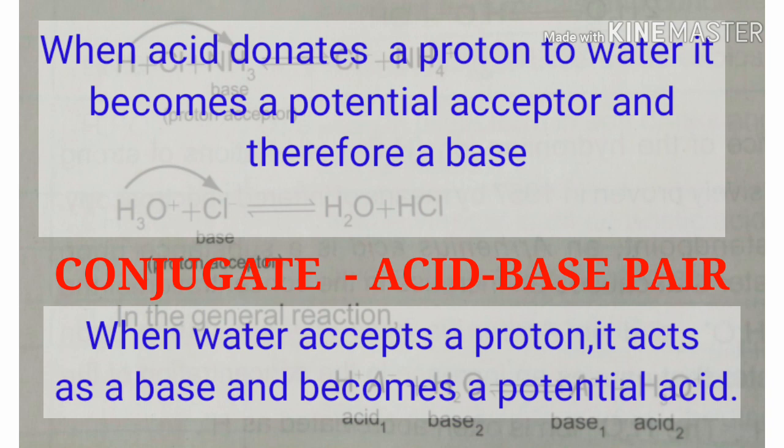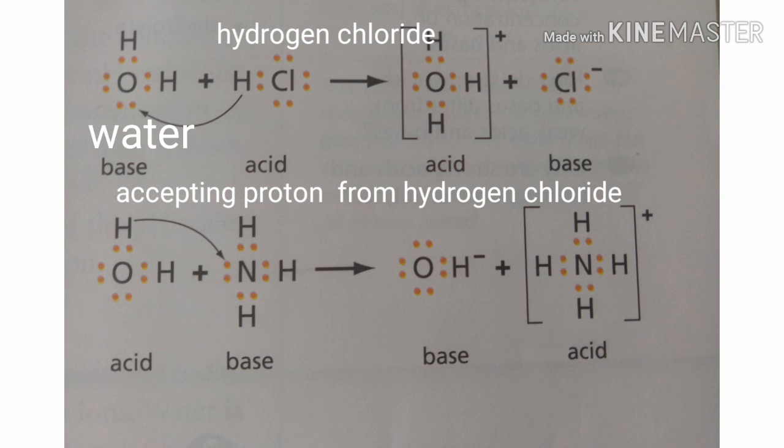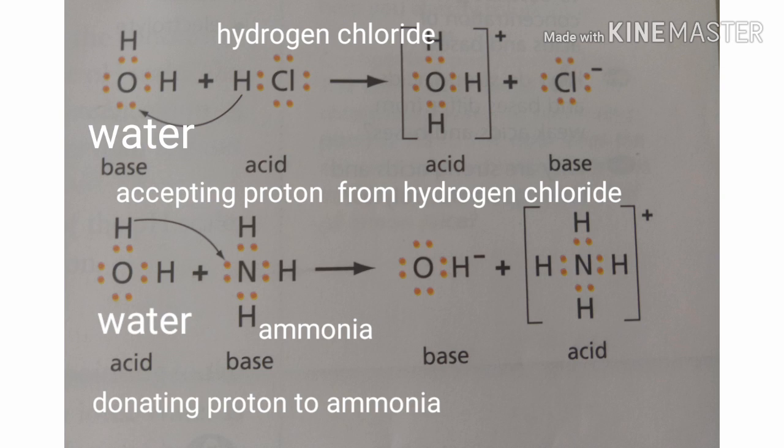An acid and a base that are related by a transfer of protons are called a conjugate acid-base pair. Acids can be defined as proton donors and bases can be defined as proton acceptors. In the given figure, in the first reaction, water acts as a base accepting a proton from hydrogen chloride. In the second reaction, water acts as an acid donating a proton to ammonia.